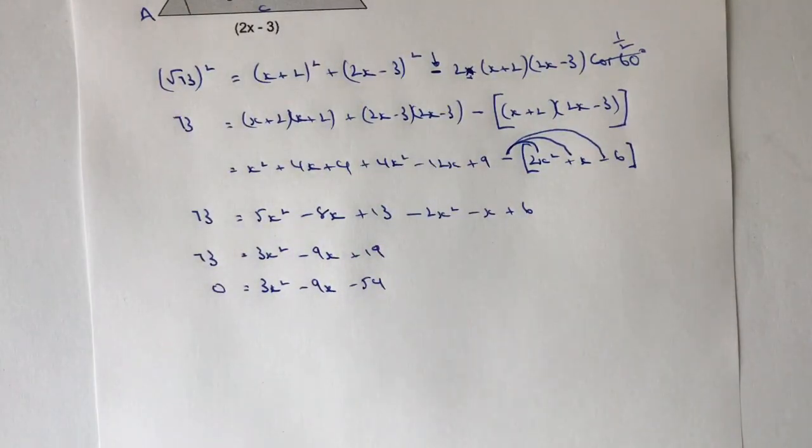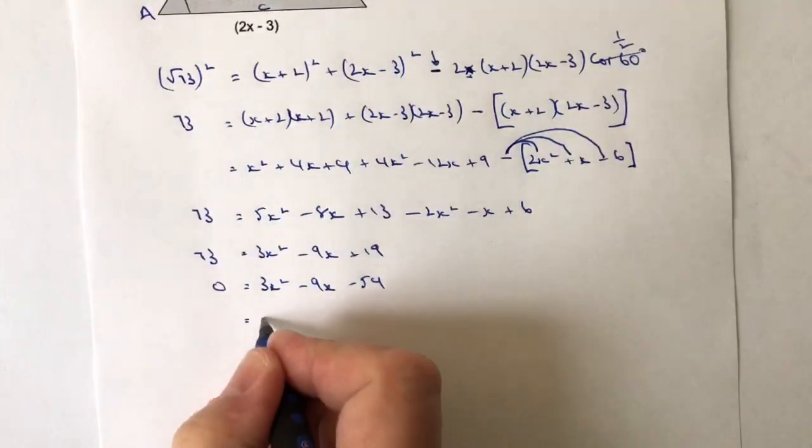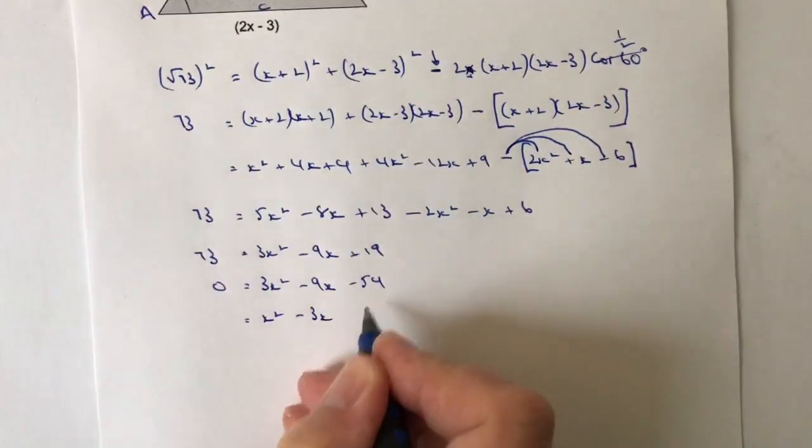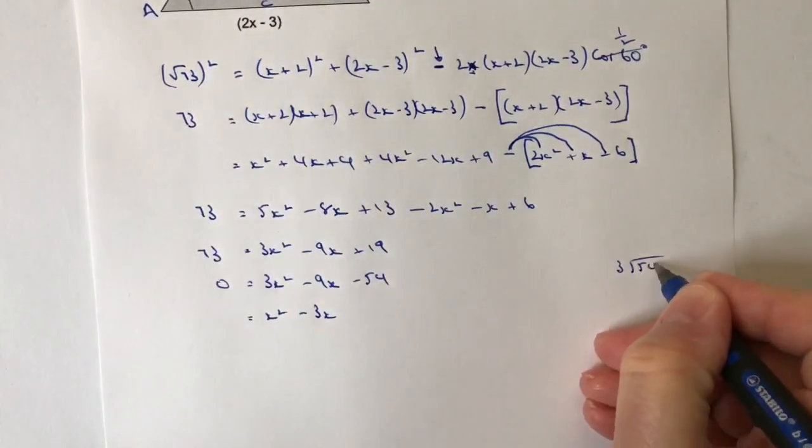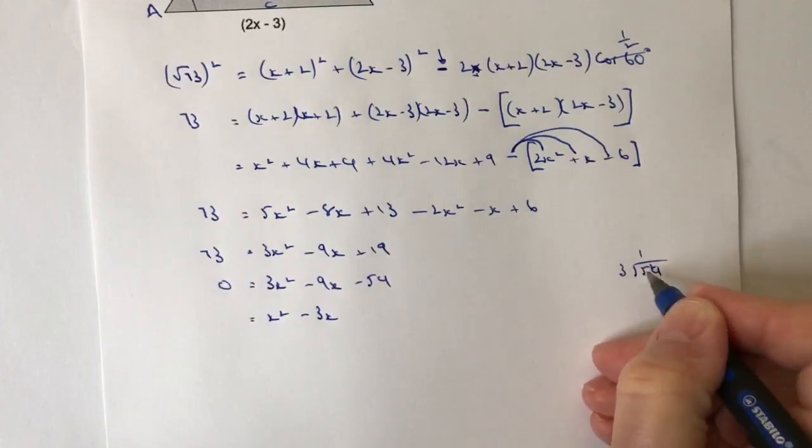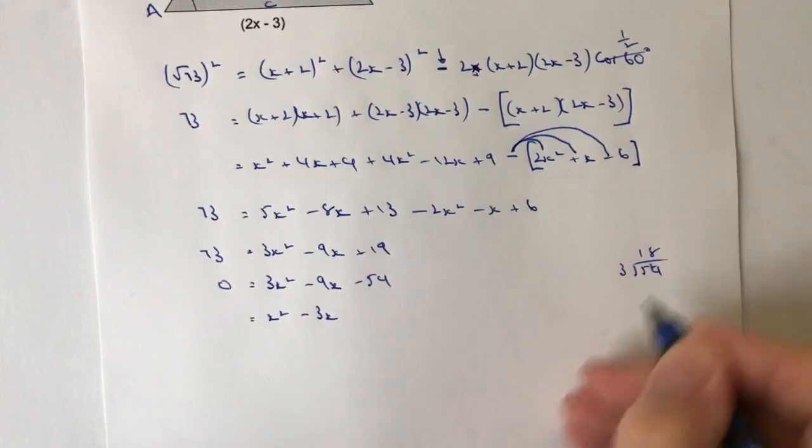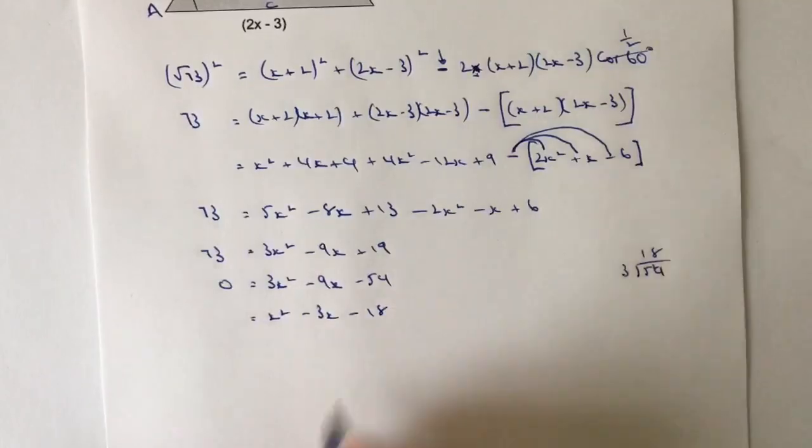So we're now in a position where we've got something that we can factorise and it is a quadratic equation. The difficulty is how do we actually factorise this? Well, I think there's a couple of different ways in which we can do this. But what I think I'm going to do is I'm actually going to divide through first by 3. Because if I do that, I'm going to get x squared minus 3x and 3 into 54 is the same as saying 3 into 54, which is 18, so that's minus 18.